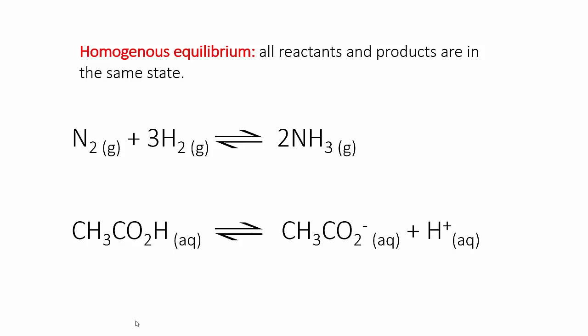Notice that I've written these chemical equations using an equilibrium arrow. That's two single-headed arrows pointing in opposite directions. This is used to represent the fact that both the forward and reverse processes are happening simultaneously.